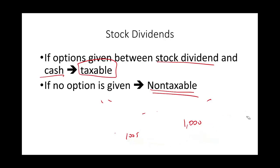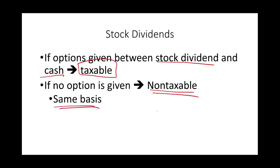The IRS wants you to pay taxes if you have access to the money. When they give you the option, they gave you access to the cash, so the amount is taxable. If no option is given, those new additional shares — say 100 new shares giving you 1,100 total — have the same basis. The amount you invested in those shares is the same; you still have the same total basis.